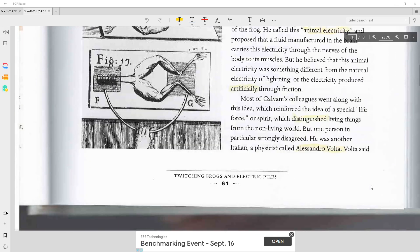But he believed that this animal electricity was something different from the natural electricity of lightning, or the electricity produced artificially through friction. Most of Galvani's colleagues went along with this idea, which reinforced the idea of a special life force or spirit, which distinguished living things from the non-living world.